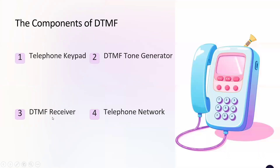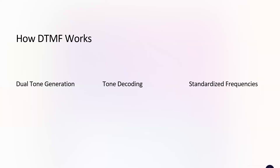About how DTMF works — there are three major functions: dual tone generation, tone decoding, and standardized frequencies. Starting with dual tone generation: when a DTMF key is pressed, the phone generates a combination of two pure tone frequencies, one from a low frequency group and one from a high frequency group. This dual tone signal is then transmitted over the telephone network. That's the reason it is called dual-tone multi-frequency.